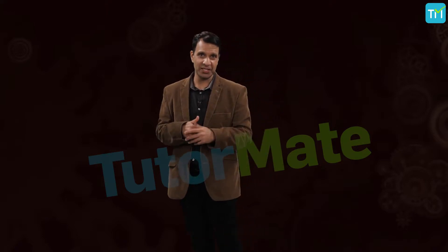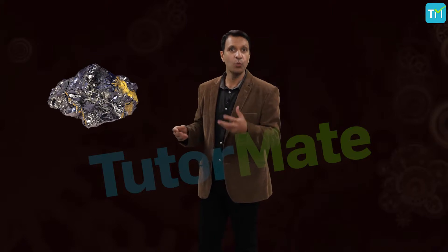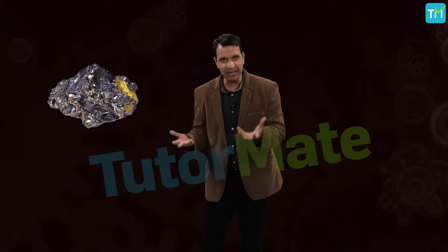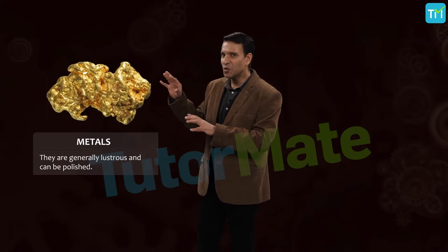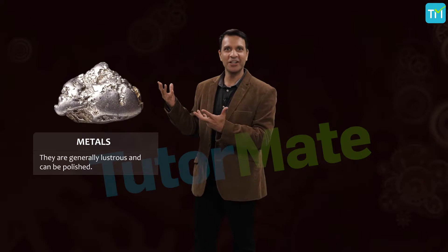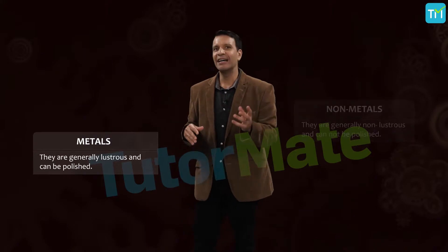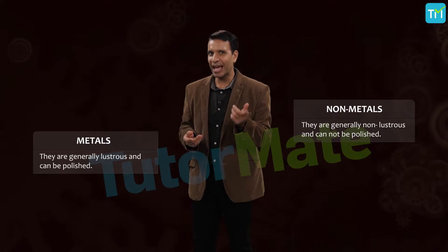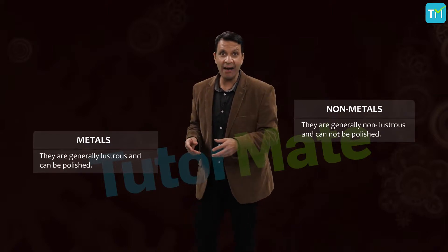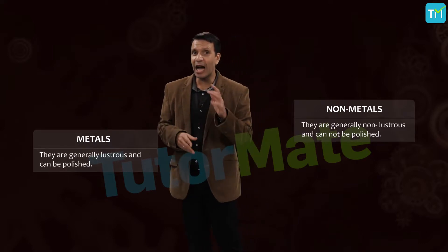Let's start with their physical properties. If you look at a metal in its rock form, you can easily distinguish it from other rocks — because metals are lustrous, so it would shimmer. For example, gold, silver, and copper all have an innate lustre. Non-metals are neither lustrous nor shiny.